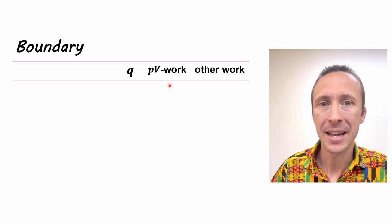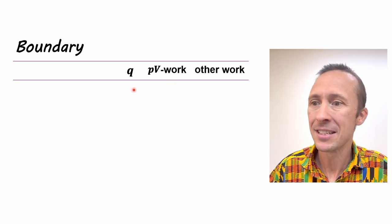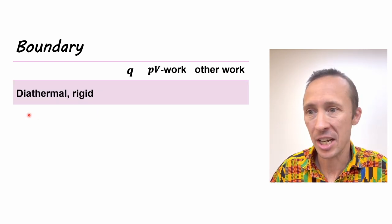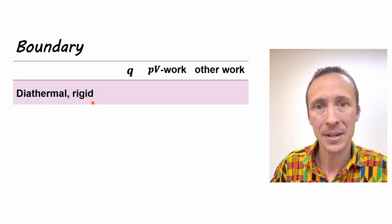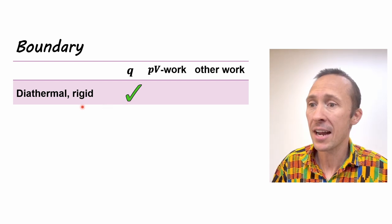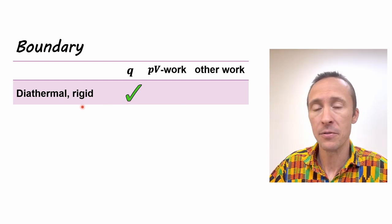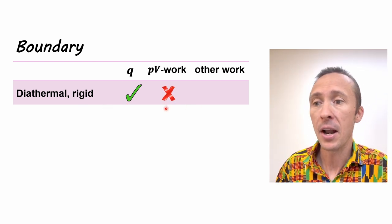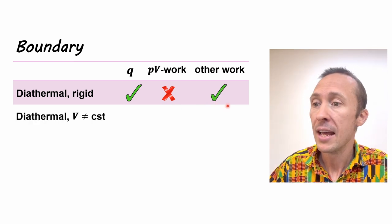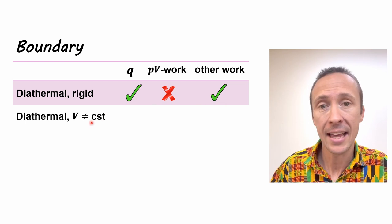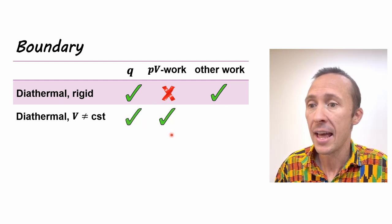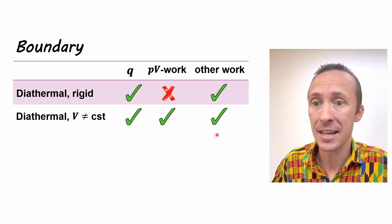So for boundaries, we think about energy being transferred as heat or being transferred as work. And if the boundary is diathermal and rigid, it allows for heat transfer because it's diathermal. If it's rigid, it can't expand or contract. So it doesn't allow for expansive or pressure volume work, but other work like electrical work may be permitted. If that diathermal wall is not rigid, then it can expand. So it allows for heat transfer and pressure volume work and possibly other work as well, depending on the process.